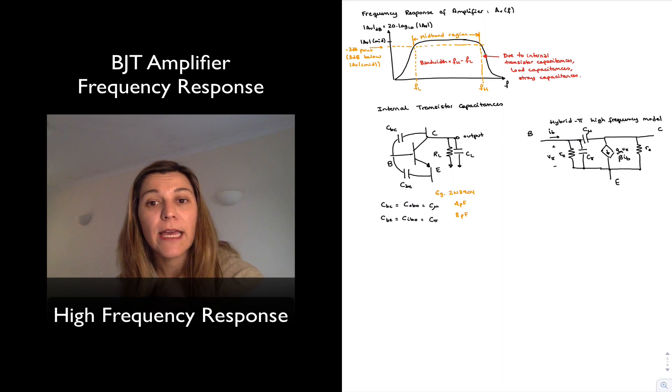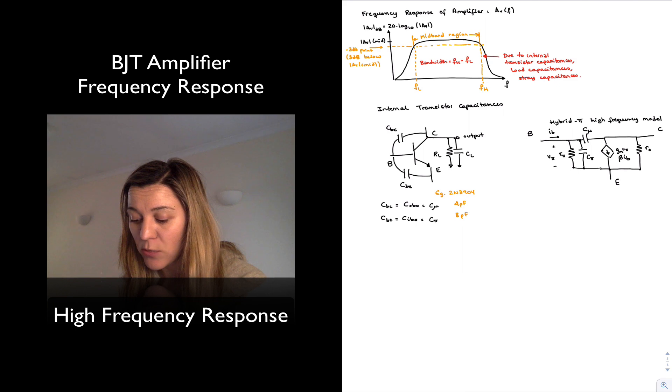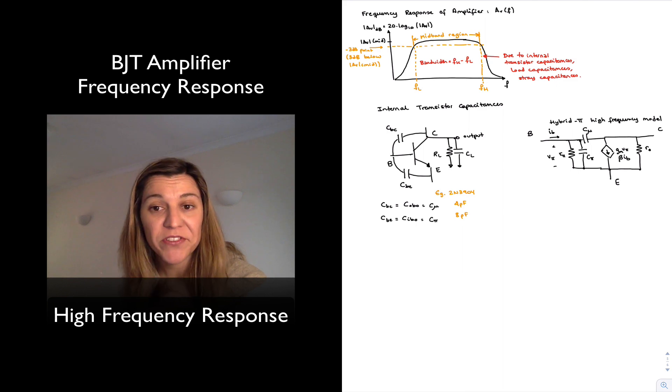And so in that case, any load capacitance is going to have an effect in the high frequency response of our amplifier. And then there are stray capacitances due to the wires, connections, etc., which we typically will also connect in parallel with CL here.